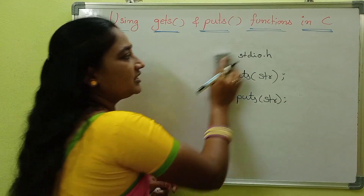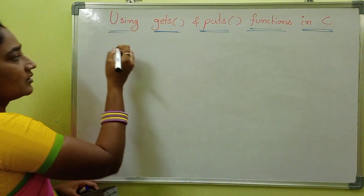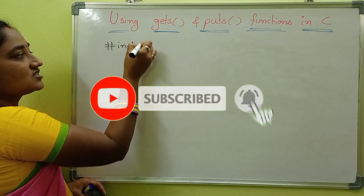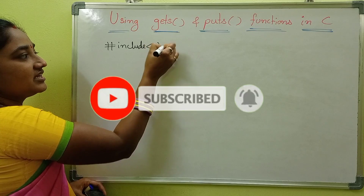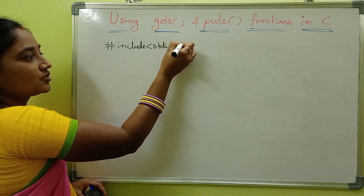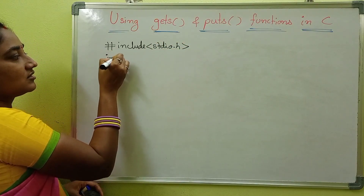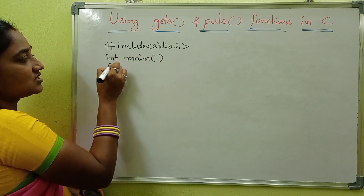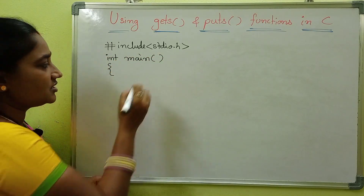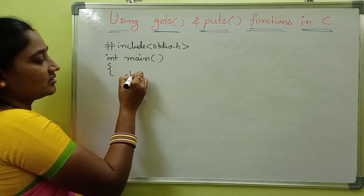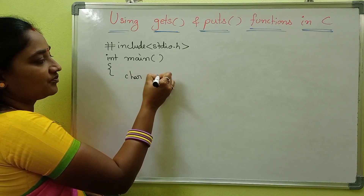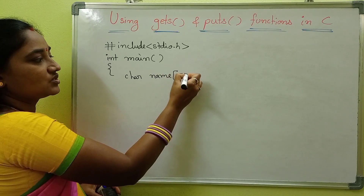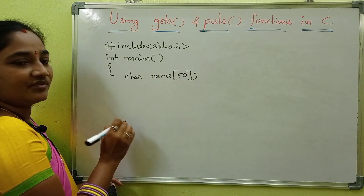Now let's take an example program. We write: #include stdio.h, int main, and at the beginning of the main function, we declare a character array — char name[50]. We can use size 50.